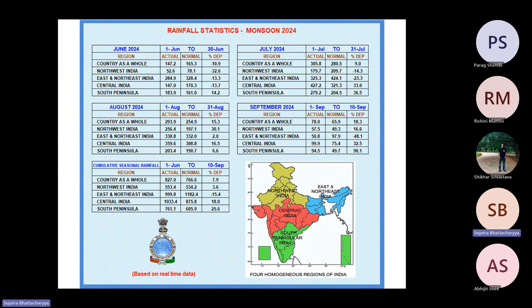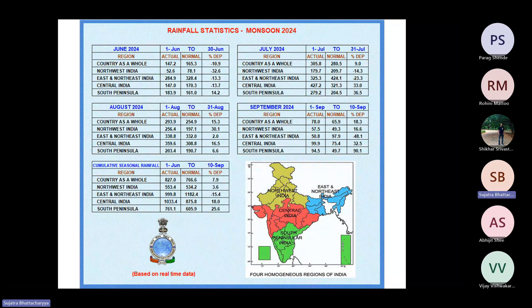Things are going smoothly in the months of this year, so there's not much to discuss here, except to note that August was 50% above normal, September is 18% above normal, and the whole season is 8% above normal.